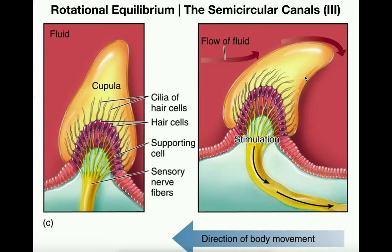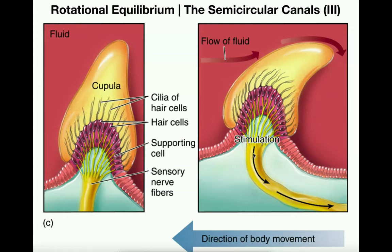Here's an example of what happens when we actually have rotation. This right here is basically the direction of rotation — let's say clockwise. The direction of the flow of the fluid is in the opposite direction, counterclockwise. The direction of rotation is always opposite the direction of the flow of fluid within the canal. So if we rotate clockwise, the fluid is going to relatively move counterclockwise, moving the cupula and the cilia of the hair cells in that direction, which leads to changes in firing of these axons.